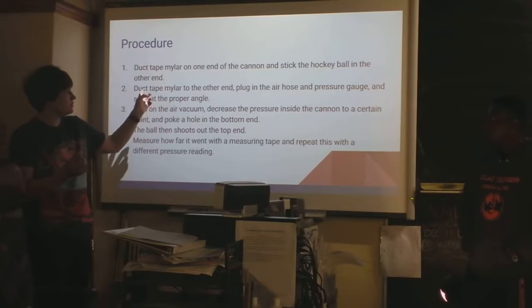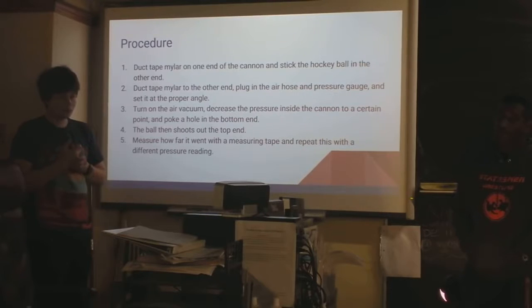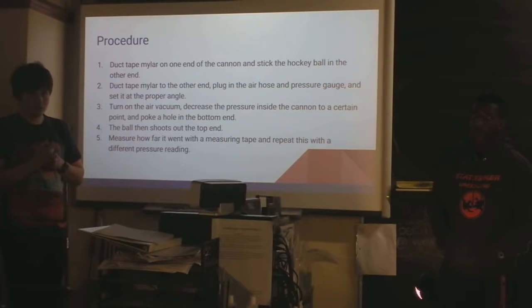After we duct taped the back end, we stuck the hockey ball in the top and it rolled down to the screw. And then we created a seal on the other end and then set it at the proper angle. We calculated the angle before using trigonometry and we put it at 60 degrees or 1.06 meters off the ground. And then we turned on the vacuum pump and decreased the pressure inside the can into a certain void. And then poked a hole in the bottom end. And then after the ball shot through the top and landed, we measured how far it went with the measuring tape.